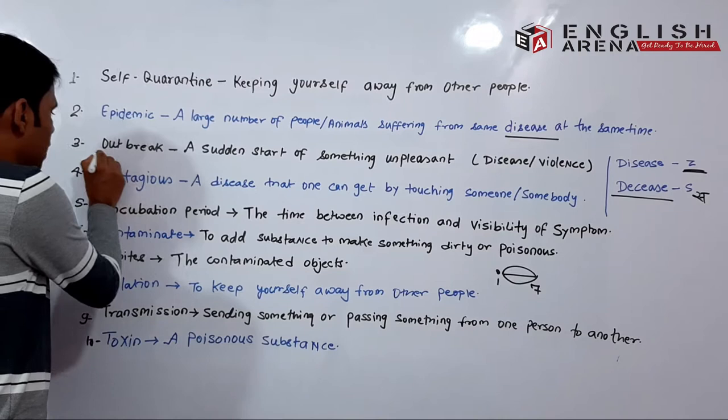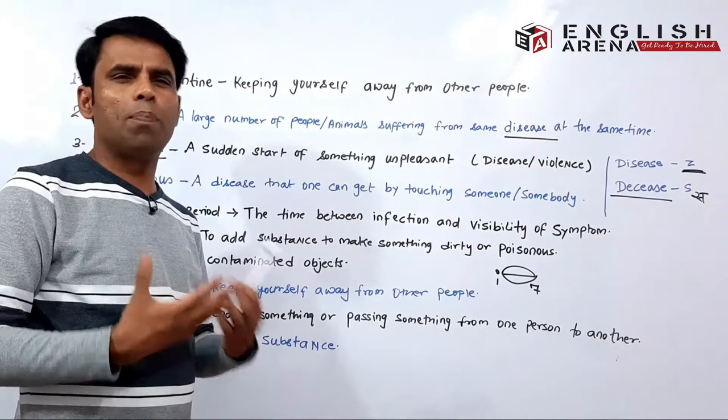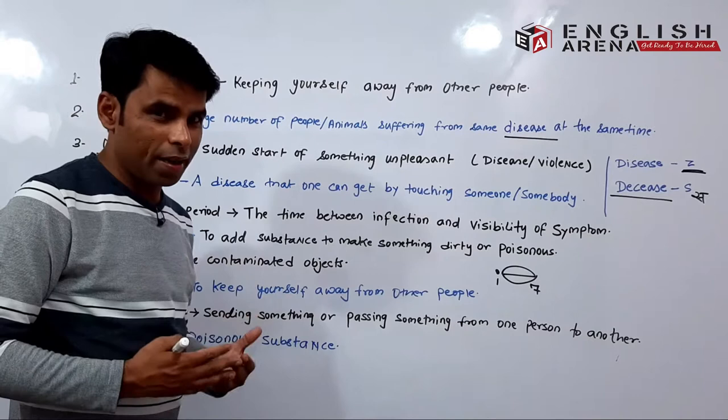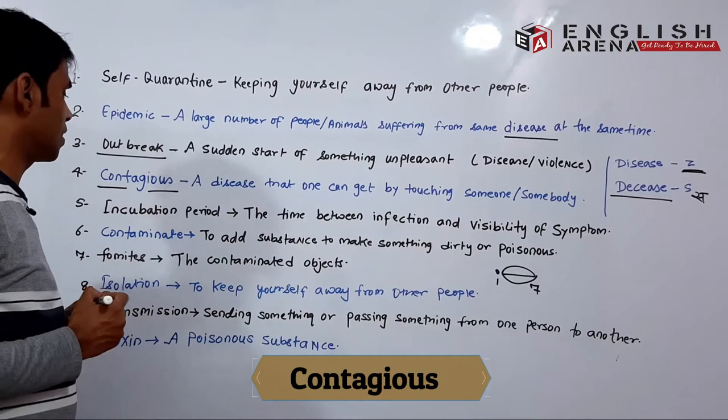The next word is 'outbreak.' Outbreak means a sudden start of something unpleasant — yaani suddenly koi cheez shuru ho jaana. It can be a disease or violence. For example: 'It was an outbreak.'